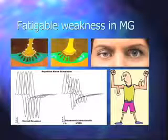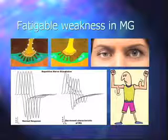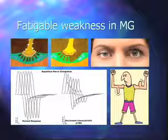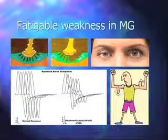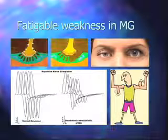One of the ways that we evaluate myasthenia in the diagnostic laboratory is to repetitively stimulate a nerve. In a normal neuromuscular junction, every time we stimulate the nerve we get the same response back from the muscle. That's because the neuromuscular junction is highly efficient, and every time acetylcholine gets released it finds its target and you get a contraction.